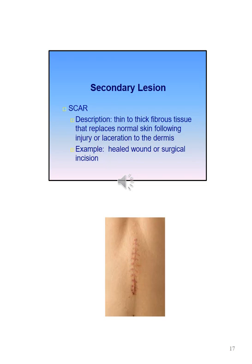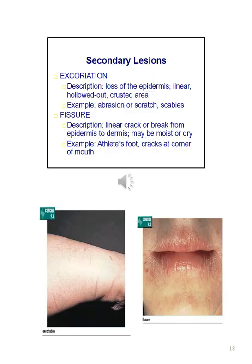A scar is thin to thick fibrous tissue that replaces normal skin following an injury or a laceration to the dermis. An example is a healed wound or surgical incision. Excoriation can be described as loss of the epidermis and it's a linear hollowed-out crusted area. Examples include abrasion or scratch and scabies. A fissure is a linear crack or break from the epidermis to the dermis; it may be moist or dry. Examples include athlete's foot and cracks at the corner of the mouth.